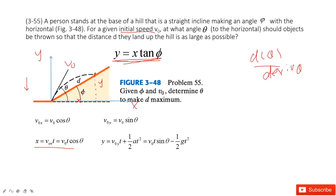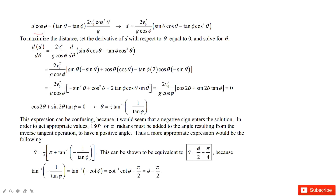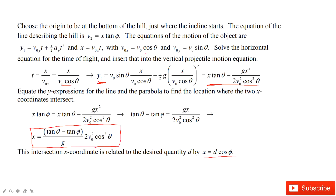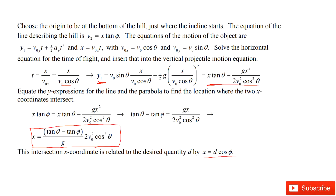So we substitute d cosine phi in, and then we can get the function d as a function of theta. Inside this function, phi is constant, g is constant, and v0 is constant. We have obtained the function d with variable theta, which is our purpose. The problem asks us to find what angle theta makes d as large as possible.